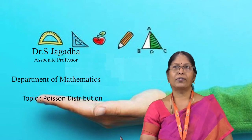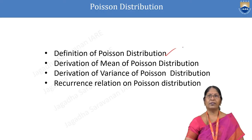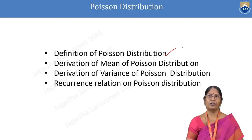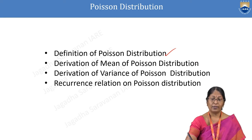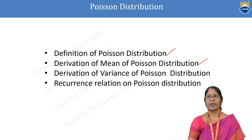The topic for discussion is Poisson distribution. We are going to discuss in detail the definition of Poisson distribution, the derivation of mean of Poisson distribution, the derivation of variance of Poisson distribution, and the recurrence relation on Poisson distribution.